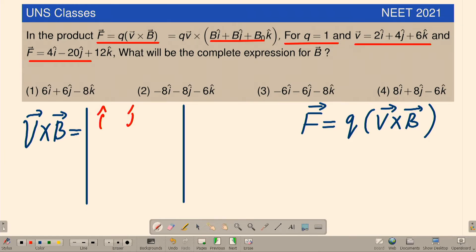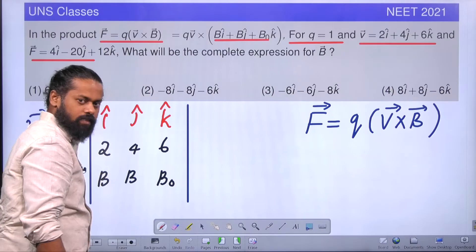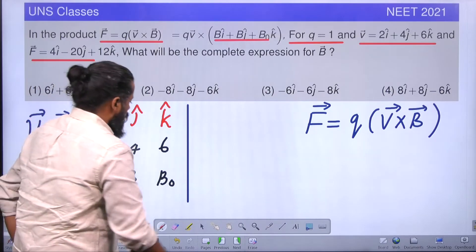i cap, j cap, k cap. Okay, now velocity vector, how much is that? 2, 4, and 6. What is B vector? It is given as B, B, B₀, or x, y, z components.